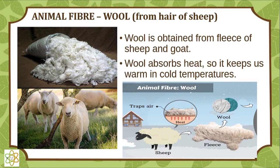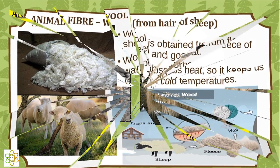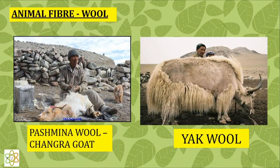Animal fiber — wool comes from the hair of sheep and goats. Wool is obtained from the fleece of sheep and goat. Wool absorbs heat so it keeps us warm in cold temperatures. The first picture is Pashmina wool from the Changra goat, and the next picture is Yak wool.